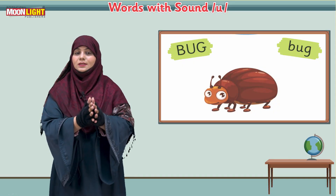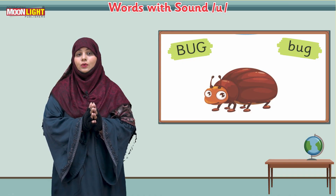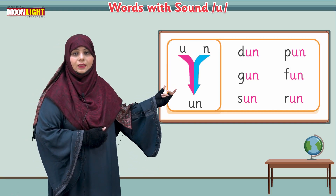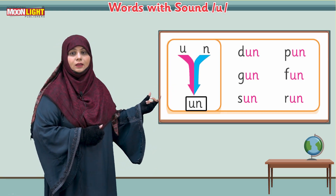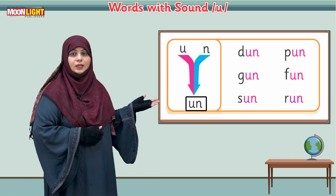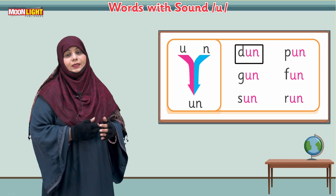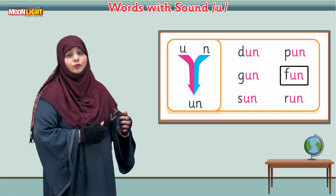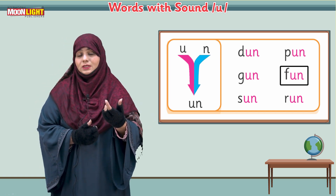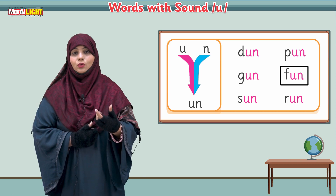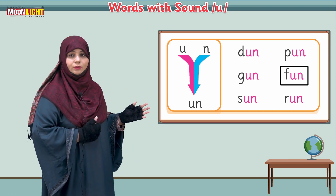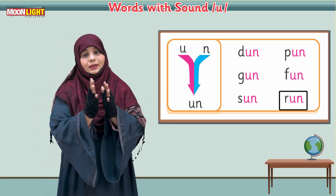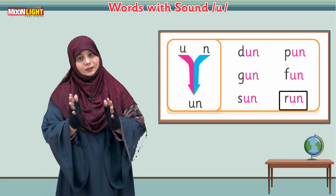First of all, we are going to join the 'u' sound with the 'n' sound — u-n: 'un.' This is 'un.' Now all of you read with me: fun, gun, fun, and gun. Then: sun, sun, run, run. Now we are going to join 'u' with another sound.